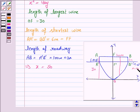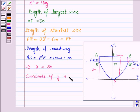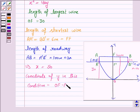Now when x = 50, y equals 30 minus 6, which is 24 meters. The coordinate of y in this condition is equal to the longest wire minus the shortest wire: 30 minus 6, which is 24. So the coordinate of B' is (50, 24).